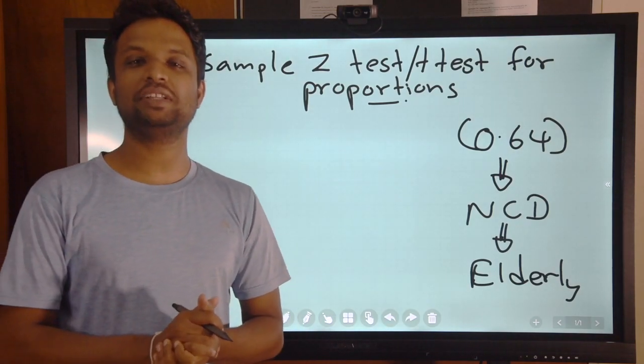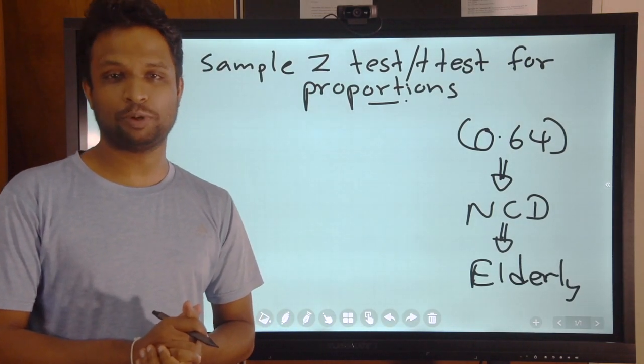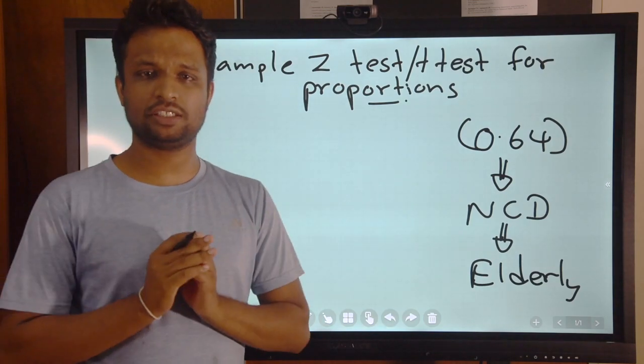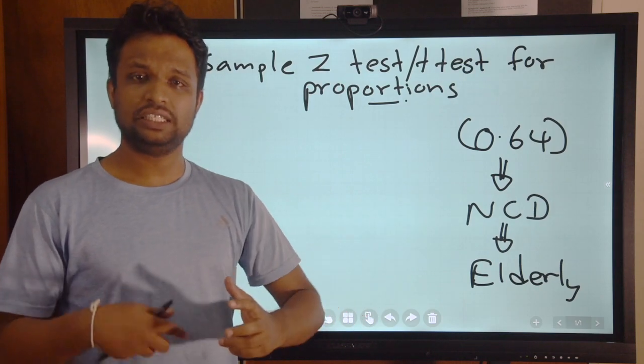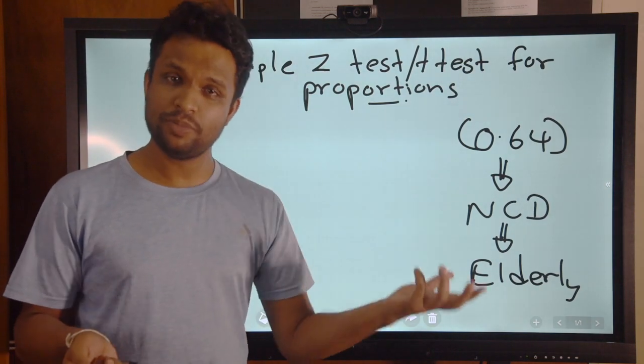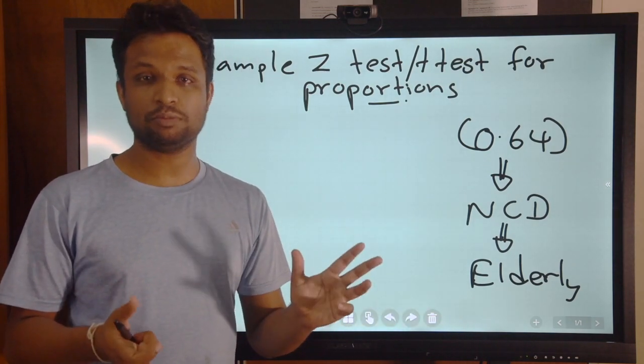Welcome to the lecture on one sample Z test or T test for proportions. In the previous lecture we discussed the basis of testing for proportions, because generally we are testing for means, but here we are talking about proportions.